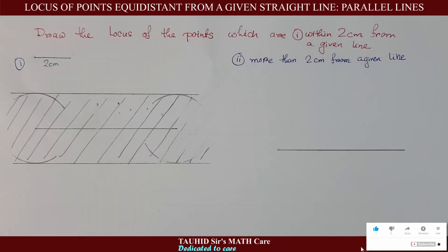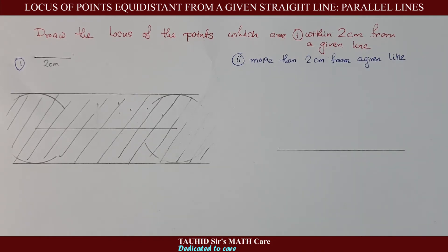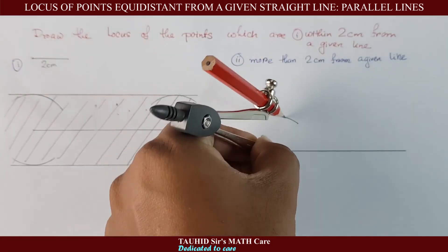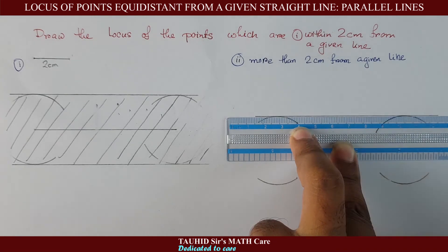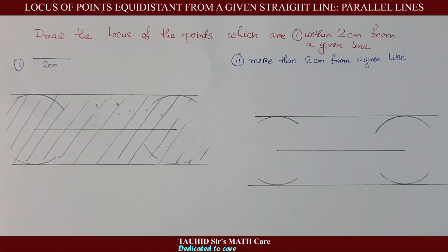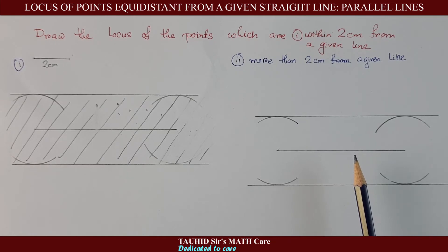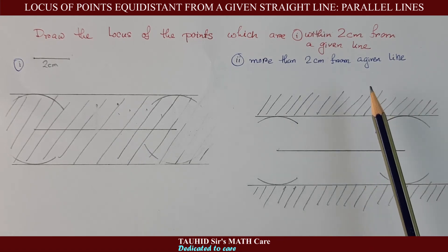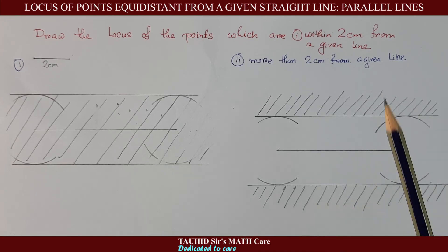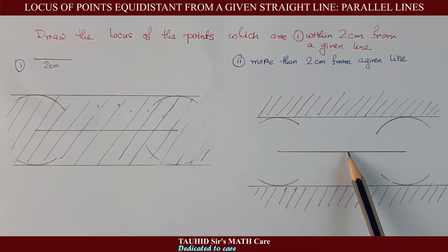In the second question, we are asked to draw the locus of the points which are more than 2 centimeters from a given line. We again first draw the locus of all points which are exactly 2 centimeters from the given line. We then find the locus of those points which are more than 2 centimeters away, meaning outside that region. The shaded region outside the two parallel lines is the answer — any point in that region is more than 2 centimeters from the straight line.